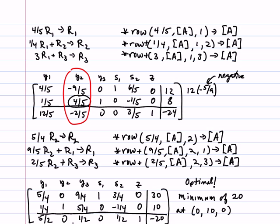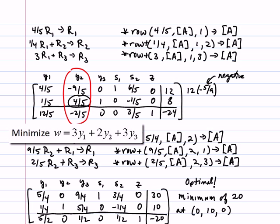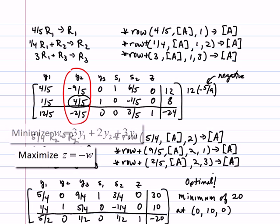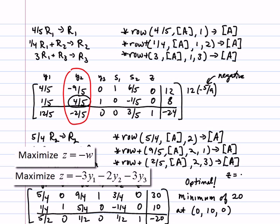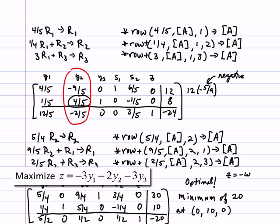Therefore, we are at the optimal value. Now notice because we took the original minimization problem and rewrote it as maximize the opposite of W, Z is the opposite of W. Therefore, our minimum value is not negative 20, but it's the opposite of negative 20, which is a positive 20.